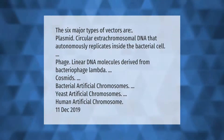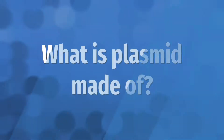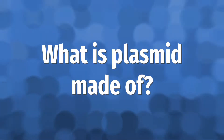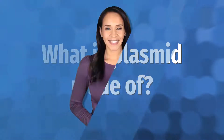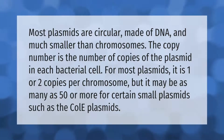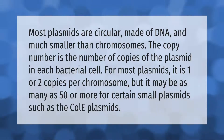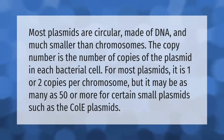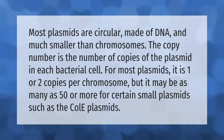Most plasmids are circular, made of DNA, and much smaller than chromosomes. The copy number is the number of copies of the plasmid in each bacterial cell. For most plasmids it is one or two copies per chromosome, but it may be as many as 50 or more for certain small plasmids such as the col plasmids.